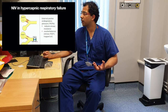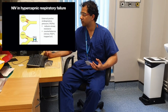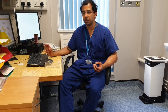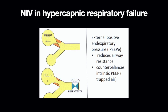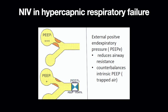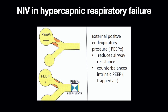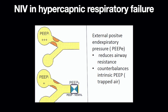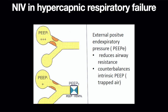Basically what happens with hypercapnic respiratory failure is that there is intrinsic PEEP — positive end-respiratory pressure. Because the lungs are non-compliant there is hypercapnia. When you apply positive airway pressure, this counterbalances the intrinsic PEEP and it allows the lung to expand fully, and then the hypercapnia gets corrected.